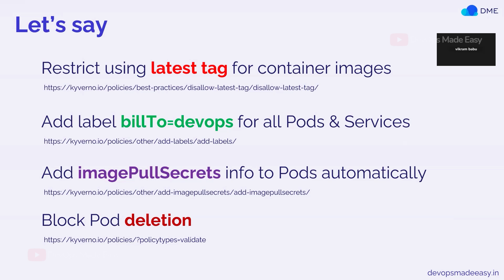Or let's say I want to add a label — for example, a label called 'build' equal to 'devops' — for all pods and services. This is not only restricted to pods and services; it can be extended to other Kubernetes objects as well. But for pods and services, I want to add this label if it is not already there. Another use case is automatically adding image pull secrets information to pods.